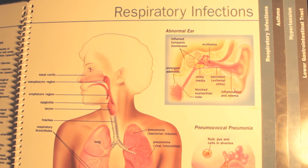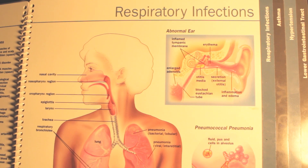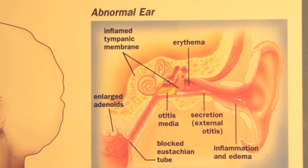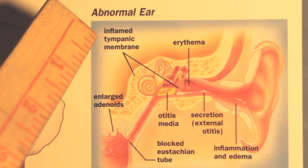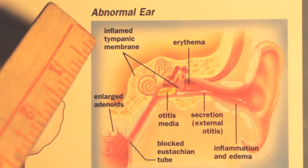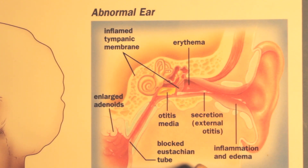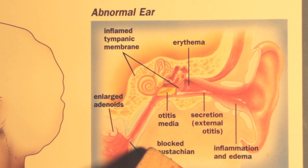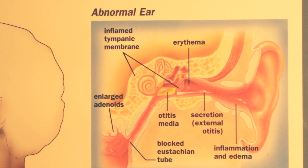Now let's take a look at respiratory infection. When we observe the abnormal air, we see a lot of inflammation going on in the tympanic membrane showing signs of inflammation. The edema also shows signs of inflammation — otitis meaning inflammation of the ear — and here you have blockage. Any time we're dealing with inflammation, we're dealing with acid and the lack of oxygen, which the acid robs the cell of oxygen. Any time we're dealing with inflammation and infection, we're dealing with an acid condition.